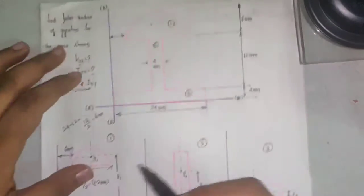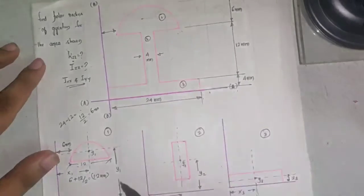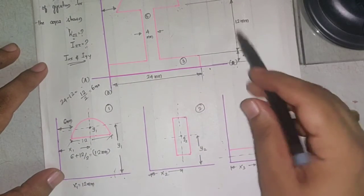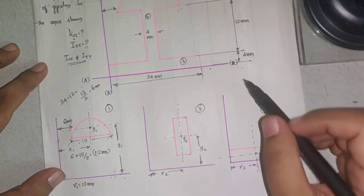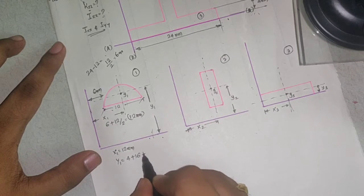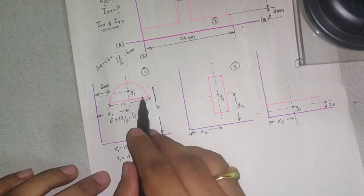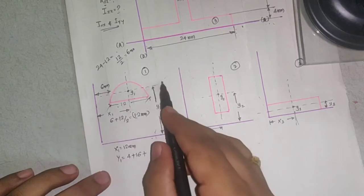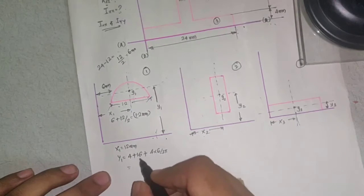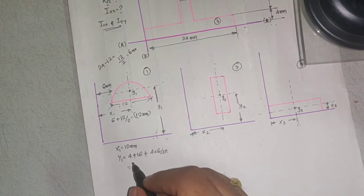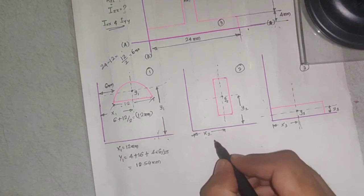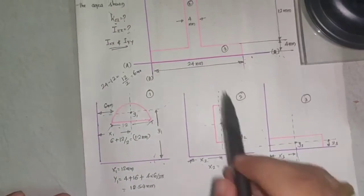For y1: from the reference axis to the center of the semicircle, the distance from the reference axis to the base of the web is 4 mm, and the height of the rectangle is 12 mm, so 4 plus 12 is 16. Then y1 is 16 plus 4r/3π, which is 4 × 6 / (3π), giving y1 = 18.54 mm. So x1 = 12 mm and y1 = 18.54 mm.